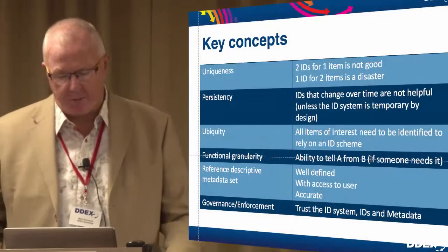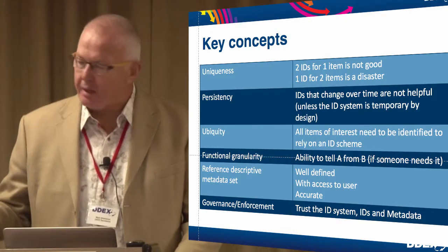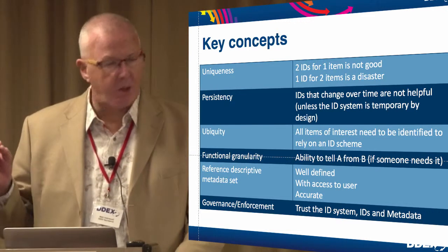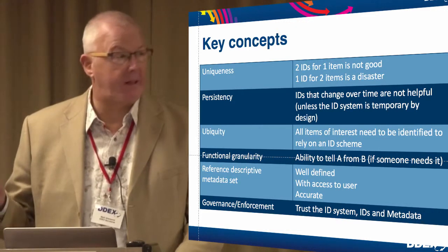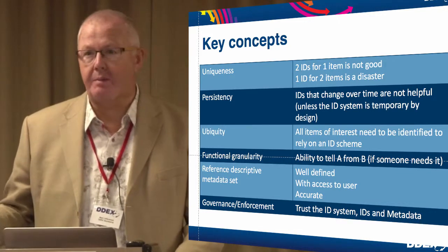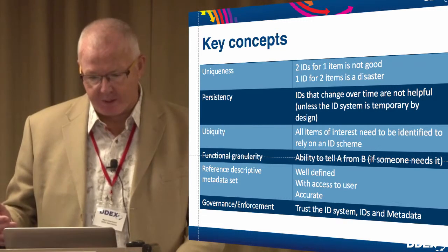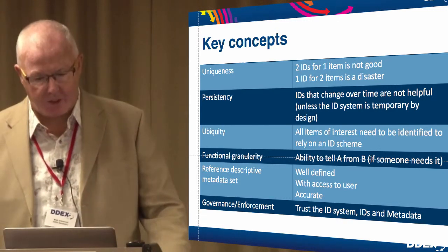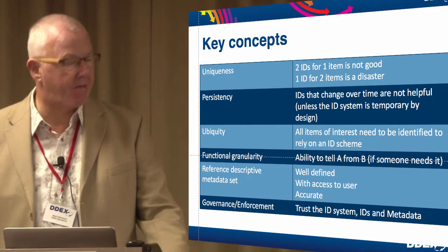And in making sure that a unique identification system works, the identifiers have to be unique. You don't want two identifiers for one item. And clearly, one identifier for two items is a complete disaster. You need persistence in the sense that the identifier never changes over time, and it sticks with the thing that it's referencing.